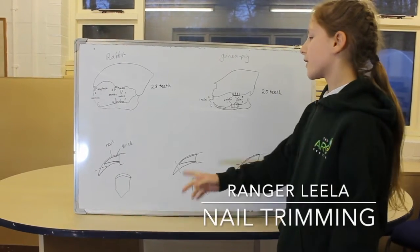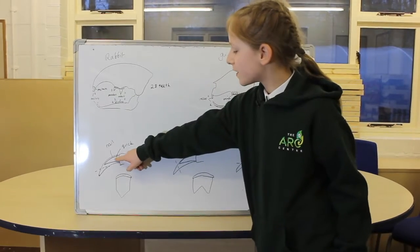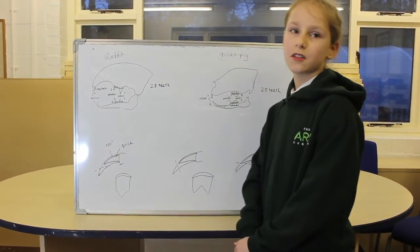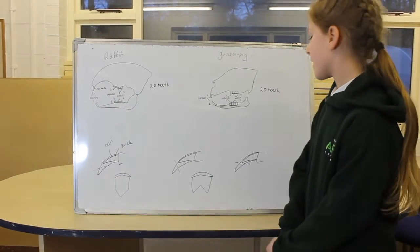This is a picture of guinea pigs and rabbits' nails. So this part in the middle is called the quick, which is a blood vessel. And then this part is the nail, so the white part of the nail.